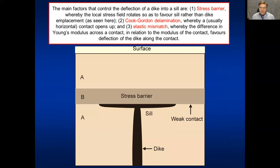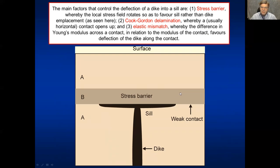What controls the deflection of a dike into a sill? The main factors are: first, a stress barrier where the local stress field rotates so that there is a flip from sigma one being vertical — favoring dikes — to sigma one being horizontal — favoring sills. Second, Cook-Gordon delamination, where a weak contact opens up partly when the dike approaches and the dike becomes deflected into that open contact. Third, elastic mismatch, where there is a sharp contrast between the Young's modulus of one layer and the layer below, compared with the Young's modulus of the contact itself.